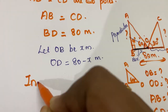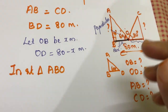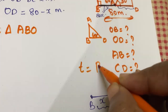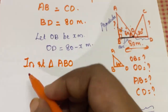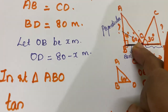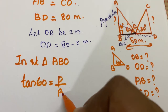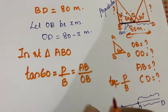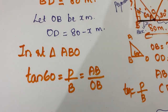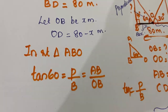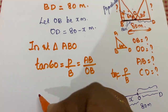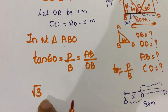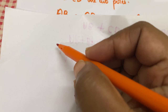In right triangle ABO, we apply the trigonometric ratio: tan equals perpendicular divided by base. Using tan 60 degrees, tan 60 equals AB divided by OB. From the trigonometric table, tan 60 equals root 3.